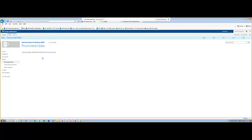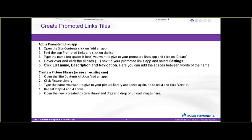The very next thing we want to do is add a picture gallery, because if you don't want pictures on your tiles it'll just give you a general blue background — it works the same, it just doesn't have any images. But what we want to do is add images to represent what we want to display for each tile. We're going to do it just like we added the promoted links — go to the site, add an app. This time we're going to add a picture library, going through the exact same steps: first give it a name with no spaces, then repeat steps four and five — hover, change the name.